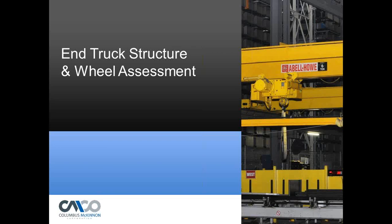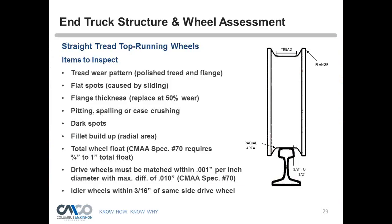Next is the end truck structure and wheel assessment, typically done during annual inspections. Looking at a straight tread top-running wheel, items to inspect include: tread wear patterns, polish, flange, flat spots, flange thickness (replace at 50% wear), pitting, spalling or case crushing, dark spots, and fillet buildup. Total wheel float per CMAA specifications is 3/4 to 1 inch, with 3/8 to 1/2 inch between the rail head and the start of the wheel's flange slope.